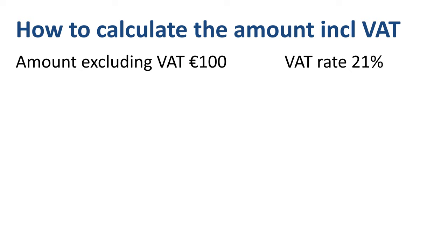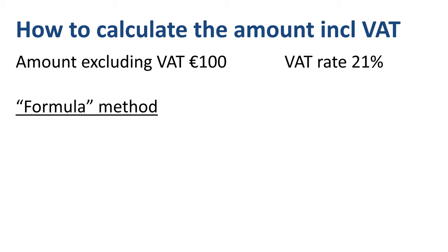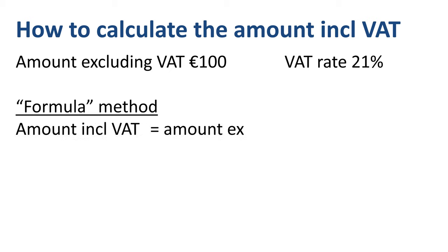The second way to calculate the amount including VAT is the formula method. This formula is the central one for the entire video, as you can use a variation of it for the other VAT calculations as well. The amount including VAT equals the amount excluding VAT times (1 plus the VAT rate).